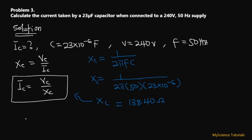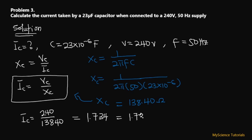Now using Ic = Vc / Xc, we substitute: Ic = 240 / 138.40. Computing this gives us 1.734, which to two decimal places is 1.73 amperes as our current. This is how we solve basic problems involving a purely capacitive AC circuit. Thank you so much for watching, and I will see you in the next video.